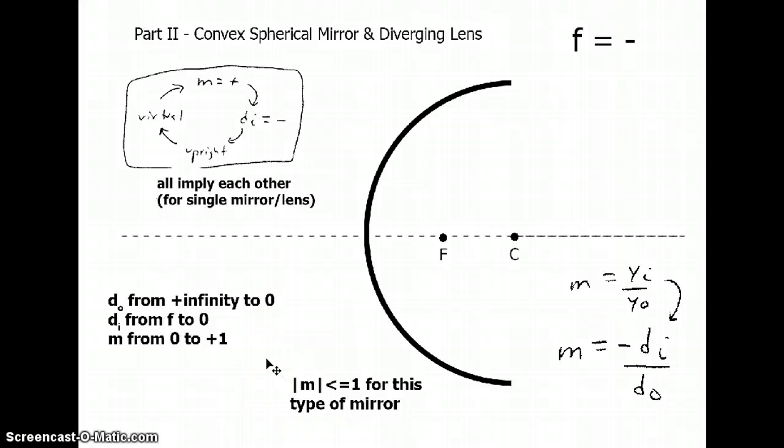Now, if you can understand that and kind of get the gist of a convex spherical mirror, you've already understood the diverging lens. The diverging lens is exactly the same thing, except for the light passes through because it's a lens, and instead of bouncing off, because it's a mirror. So let's take a look at that.